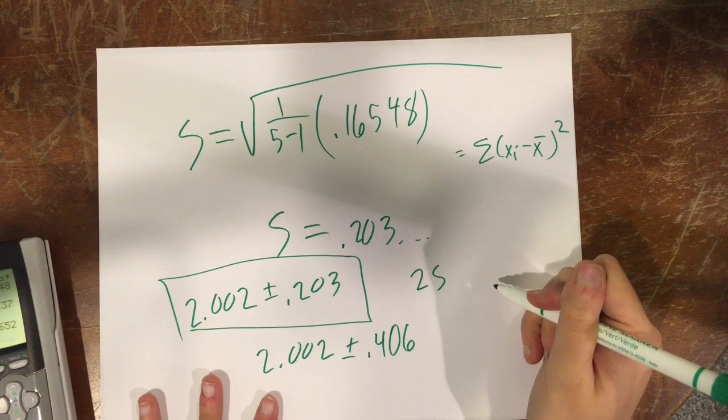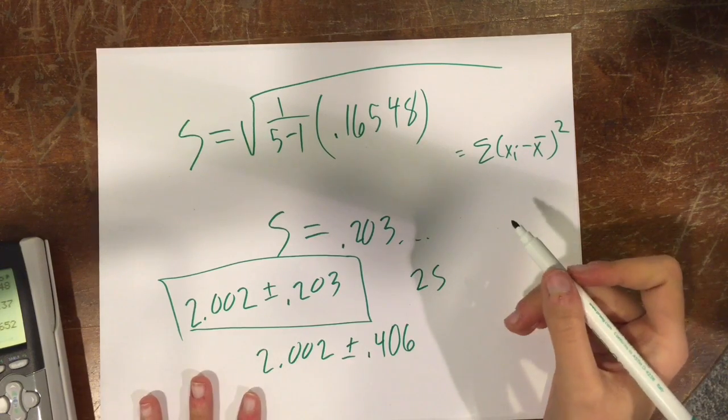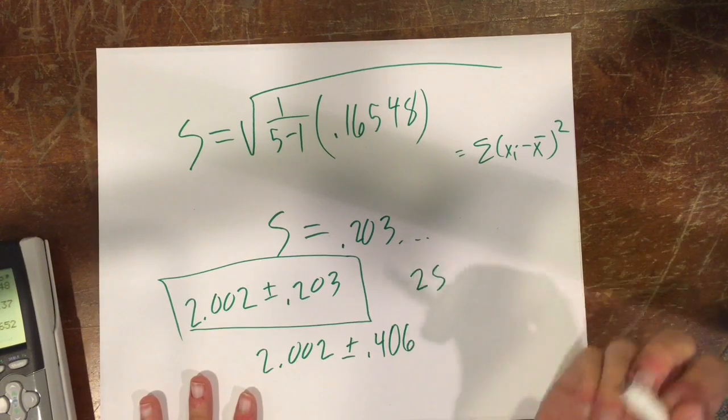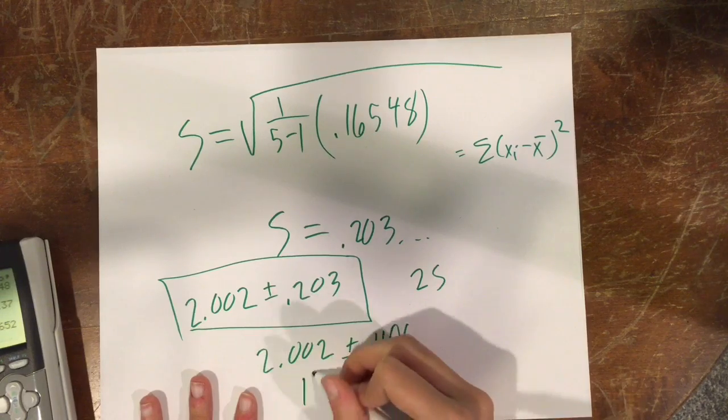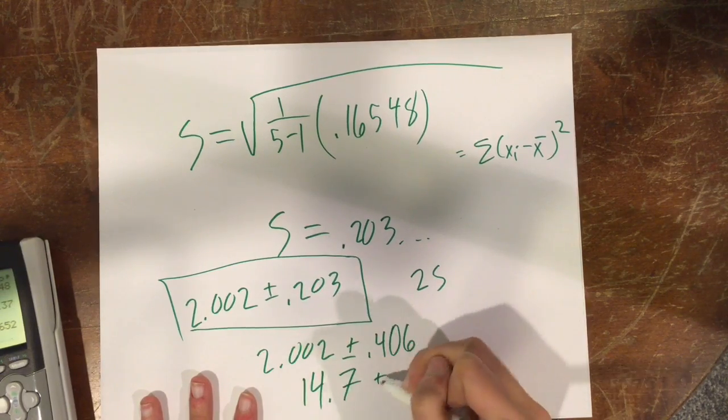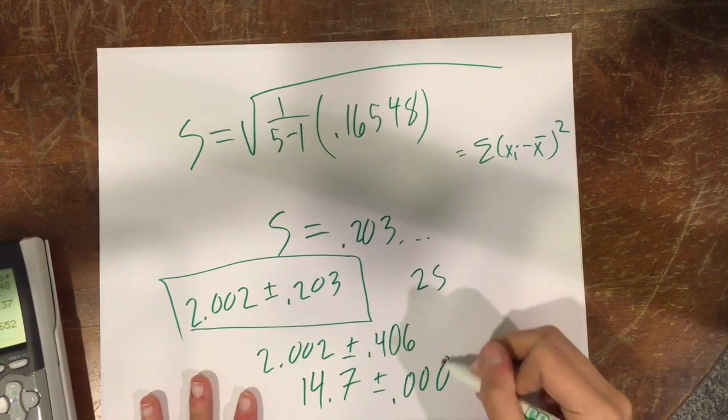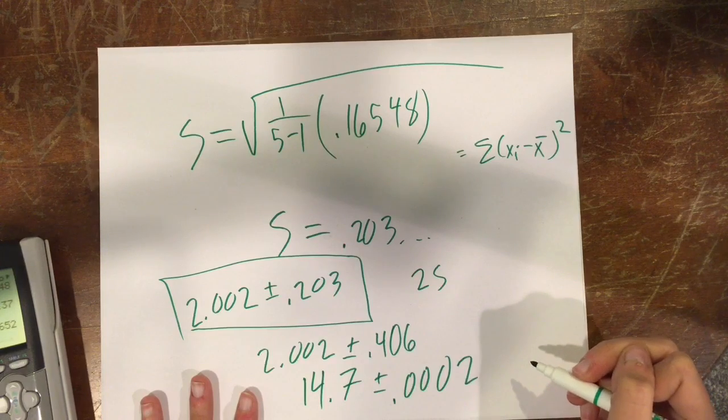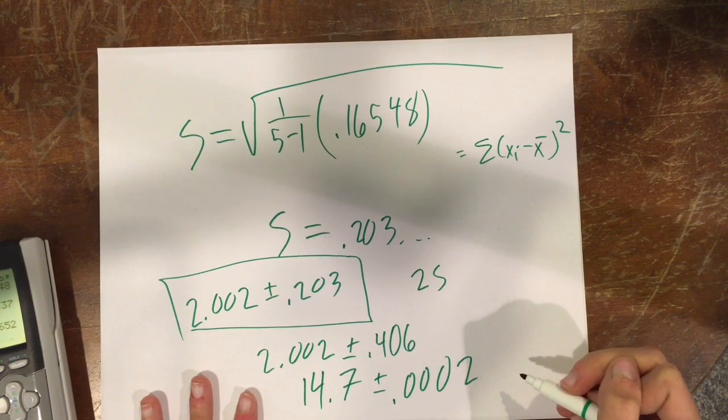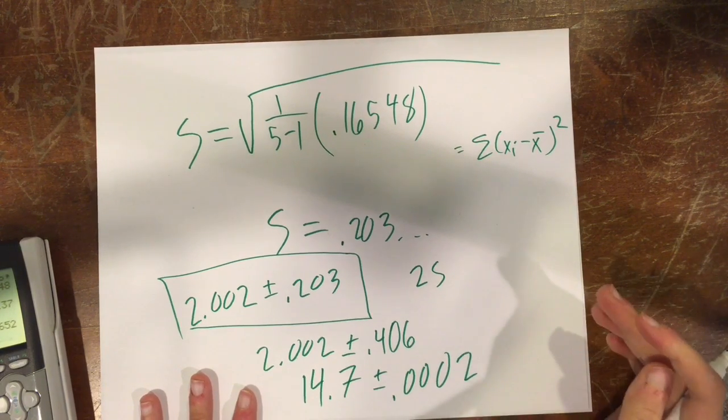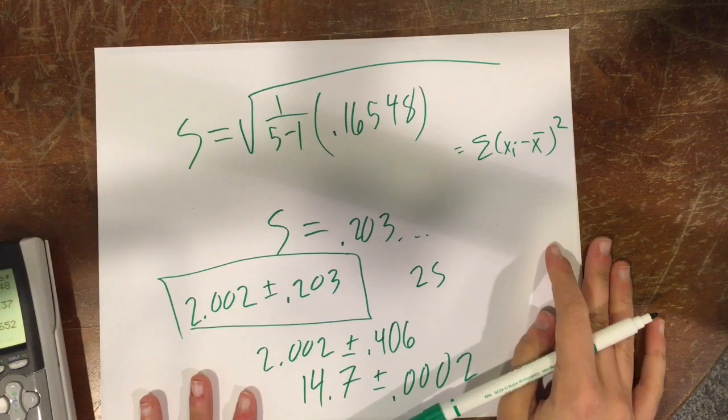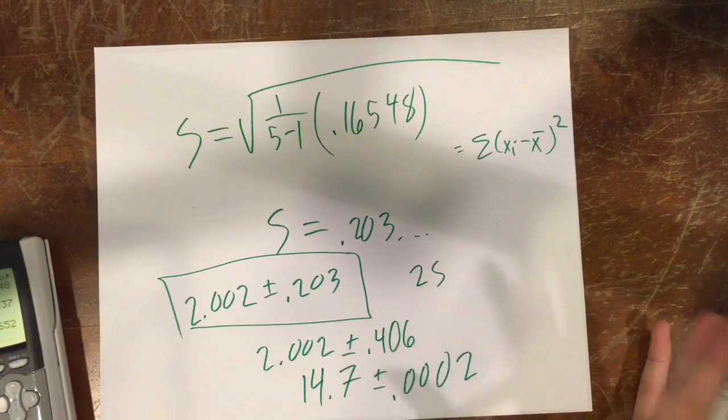So, when you see numbers and you're looking through something that's like, you know, we had a value of 14.7 plus or minus 0.0002, and they're using standard deviation, that's a pretty good number. And yeah, that's basically it.